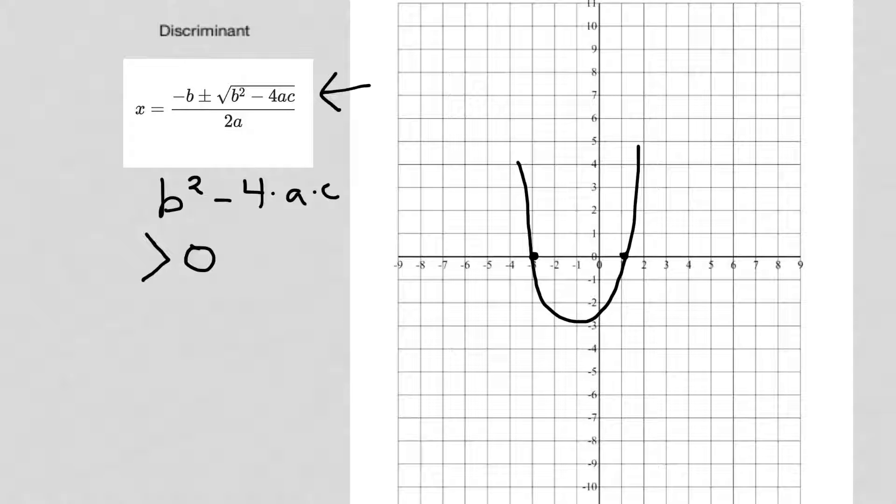So when the discriminant is greater than zero, you have two roots. When you do the calculation on the discriminant, and it equals zero, that means that it's going to have one root.